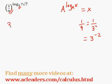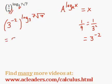So we have 3 to the power of negative 2 to the power of log base 3 of 7 root 7. Now we can quickly simplify this and multiply the negative 2 by the log and get 3 to the power of negative 2 log base 3 of 7 root 7.